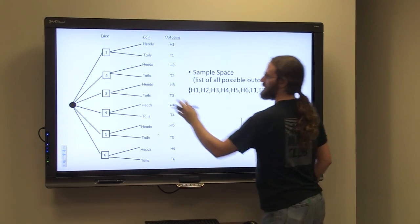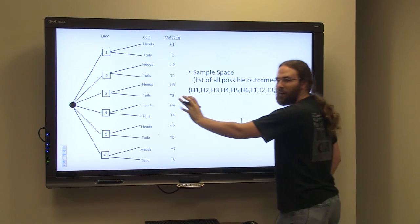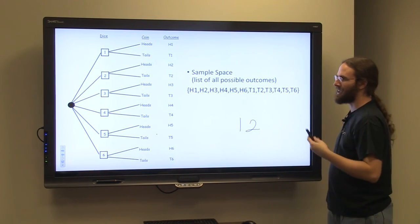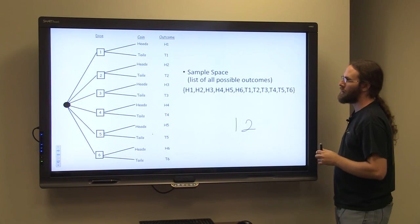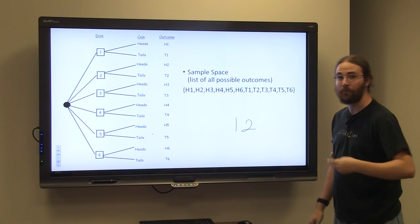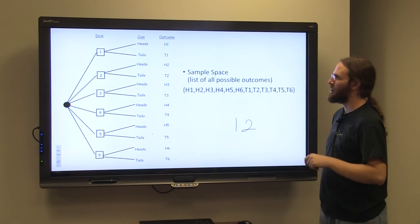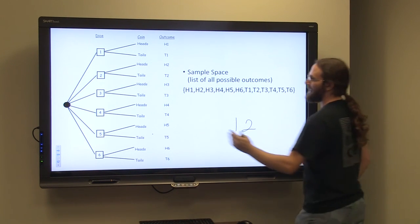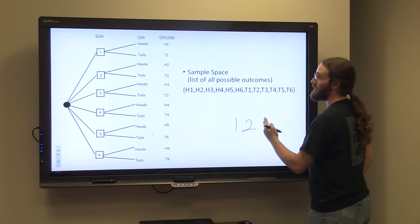Drawing a diagram is fine, but sometimes it can become cumbersome and labor intensive. When we start looking at perhaps rolling a die four times, or rolling four dice, or flipping a coin 20 times, drawing a diagram can become very cumbersome.